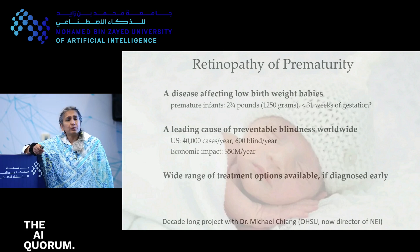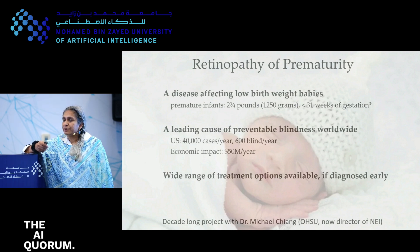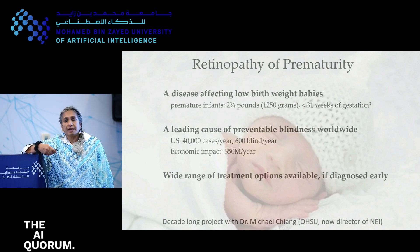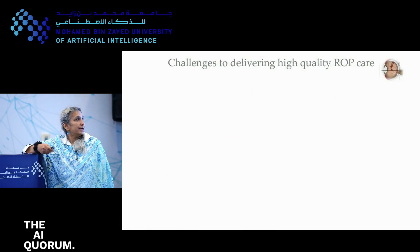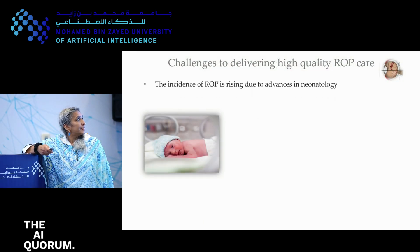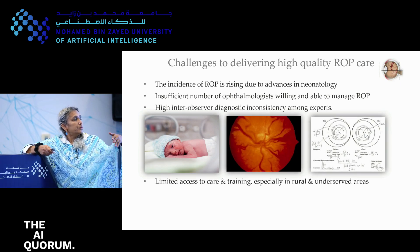The other disease we do a lot of work in is ROP — retinopathy of prematurity — a leading cause of preventable childhood blindness worldwide. It's very much a problem in low- and middle-income countries like India. There are great treatment options, so diagnosis is important, but access to care doesn't exist. There are not very many pediatric ophthalmologists in India, so how can we address that? There's a variety of reasons why it doesn't work so well.